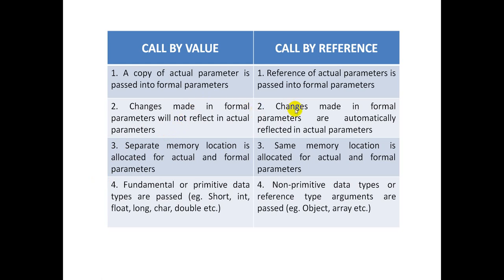Whereas call by reference में, reference pass हो रहा है। इसलिए यहाँ पर जो भी changes हो रहे हैं, वो original variable पर ही हो रहे हैं, and that's why they are reflected in the actual parameter — मतलब actual parameter change होगा unlike call by value। Call by value में क्योंकि हम copy create कर रहे हैं actual parameter का, that's why we need separate memory location for actual parameter and formal parameter. Whereas call by reference में, reference यानी address pass कर रहे हैं, that is actually pointing to the actual parameter, इसलिए actual parameter और formal parameter will share the same memory location.